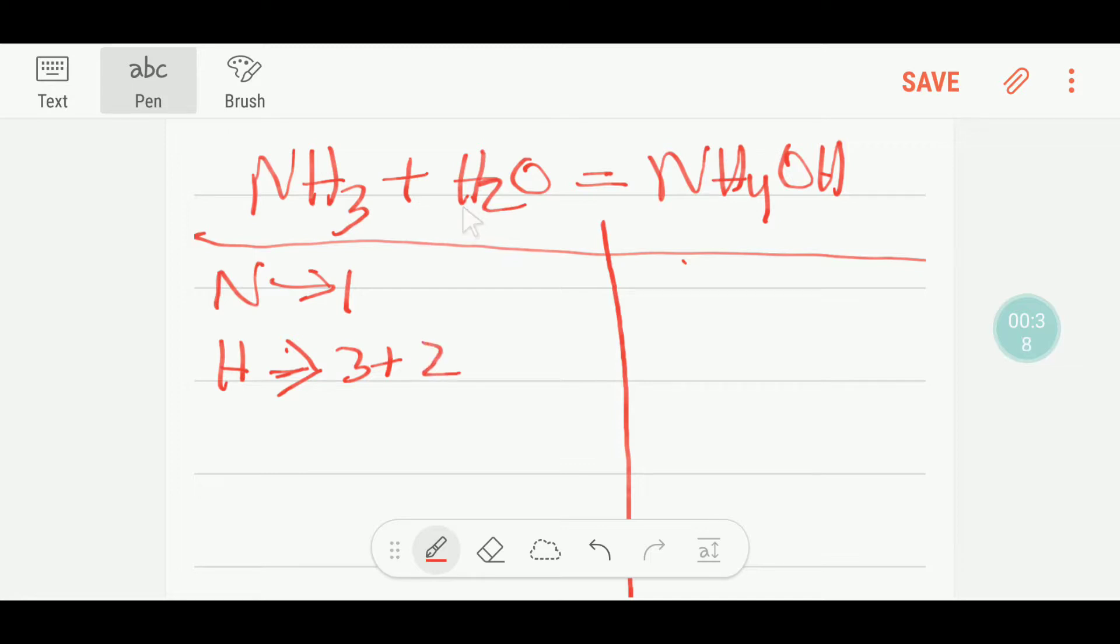That's why they make a mistake and have trouble to balance this reaction. Here we have one oxygen on the reactant side.